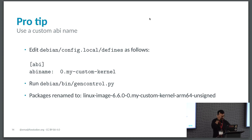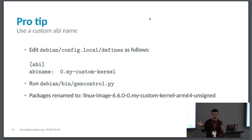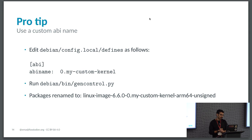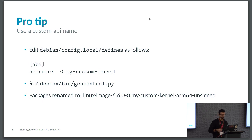One useful thing I learned is that you can change the name of the binary packages you get by setting a custom ABI name. You edit a file under debian/config/local/defines, set whatever string you like, then run gencontrol.py again—that regenerates debian/control. When you build with dpkg-buildpackage, you get binary images with your string in there, which is quite useful when running uname or looking at kernel modules on your filesystem to distinguish your test version from what's in SID.